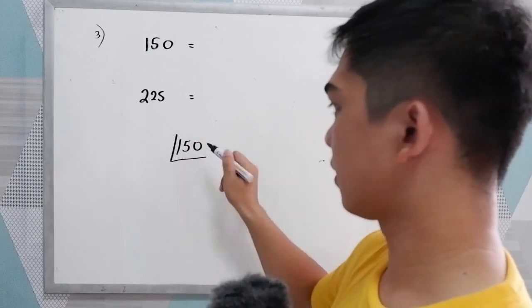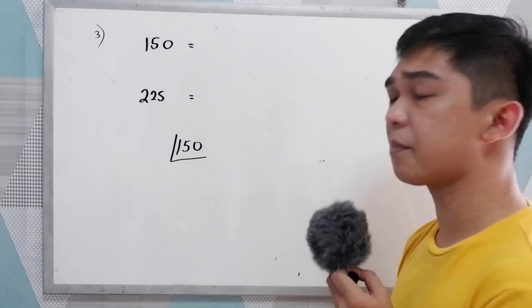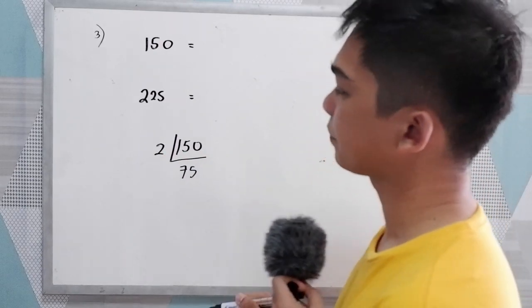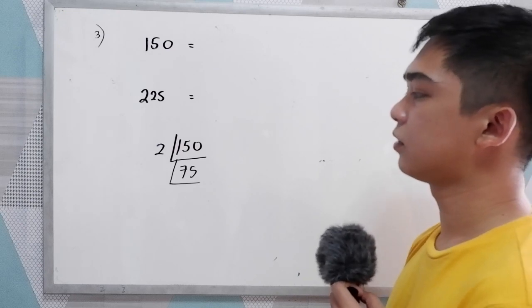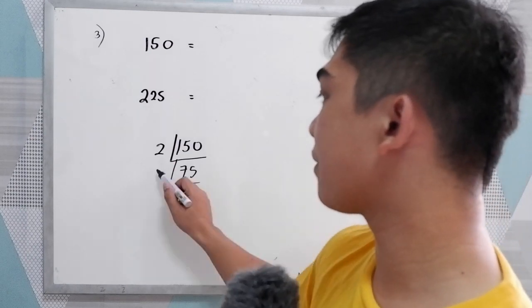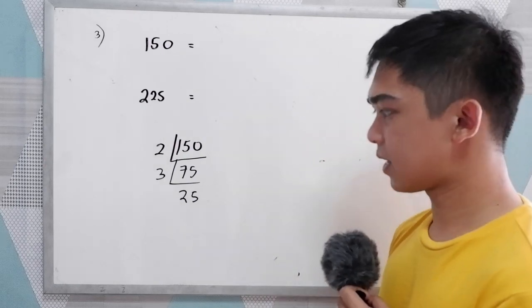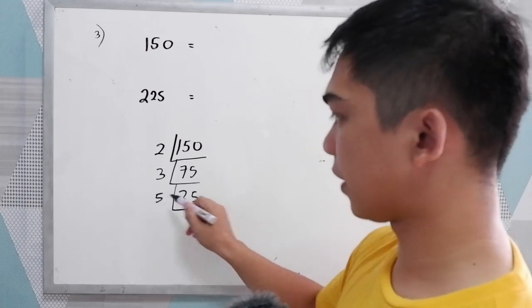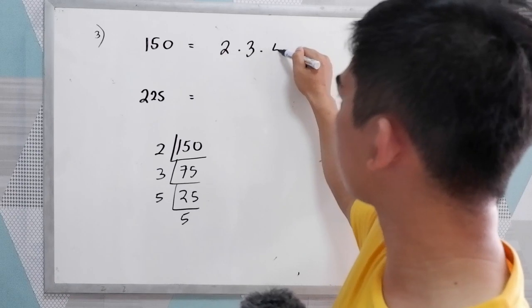For 150: it is divisible by 2, so 150 divided by 2 is 75. Now 75 is not divisible by 2. Is it divisible by 3? Yes. So 75 divided by 3 is 25. 25 is not divisible by 2 or 3, but it is divisible by 5. So 25 divided by 5 is 5. The prime factors of 150 are 2 times 3 times 5 times 5.